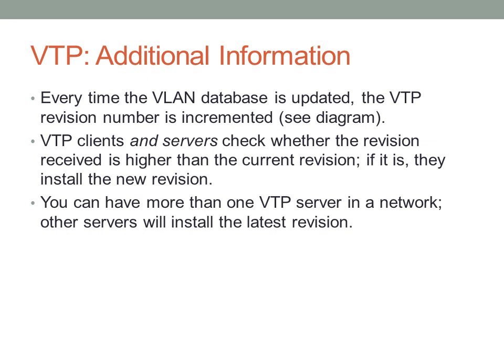You can have more than one VTP server in a network. For example, with five switches you could make all five VTP servers. If you make a change on one switch, it increments the revision number and all other switches accept it because that new revision number is higher. This can be done on any switch in the network.